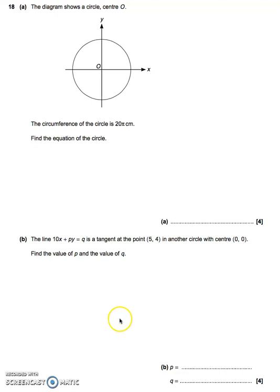Okay, in question number 18a, you've got a diagram that shows a circle with a centre at O, the origin (0, 0). The circumference of the circle is 20π centimeters. You need to find the equation of the circle.